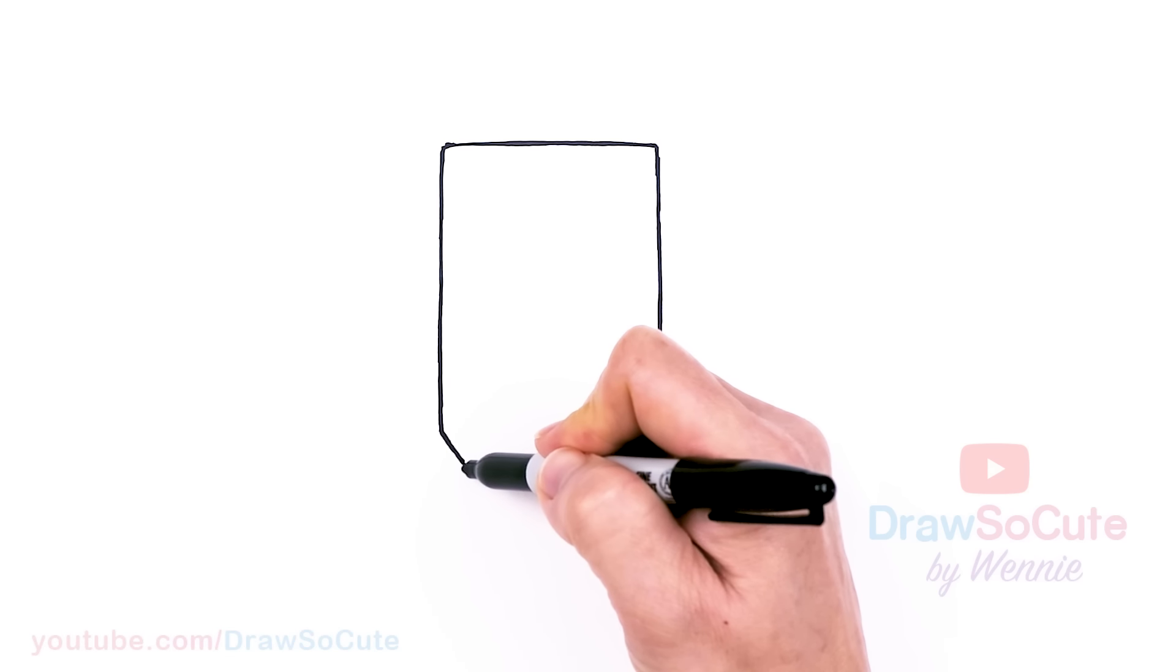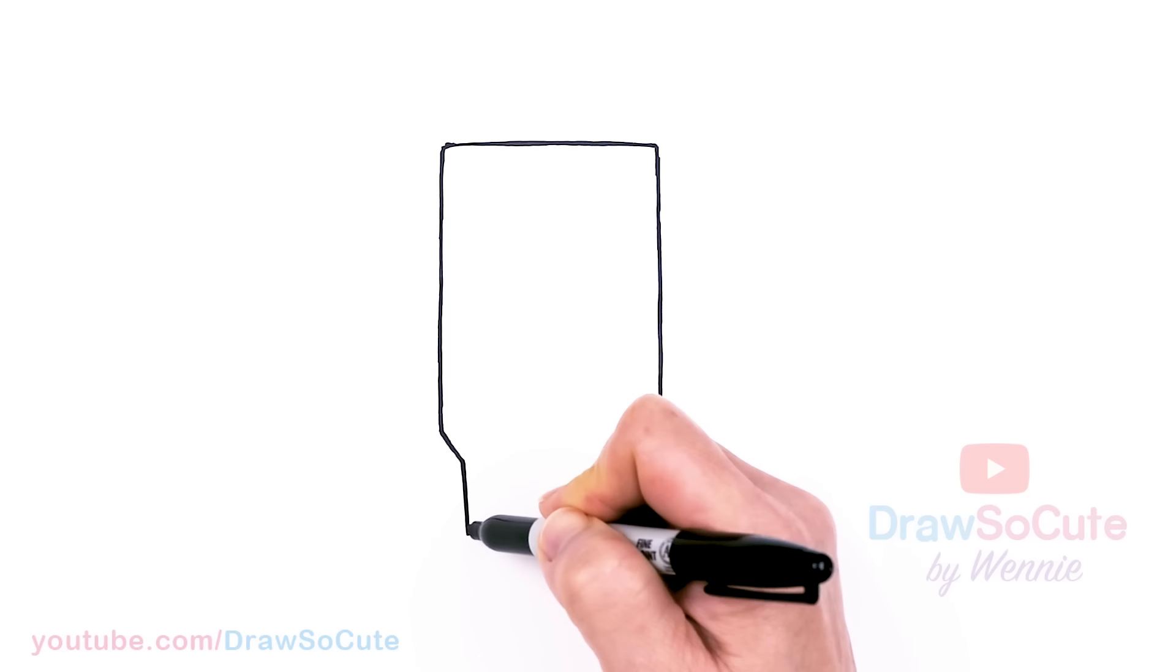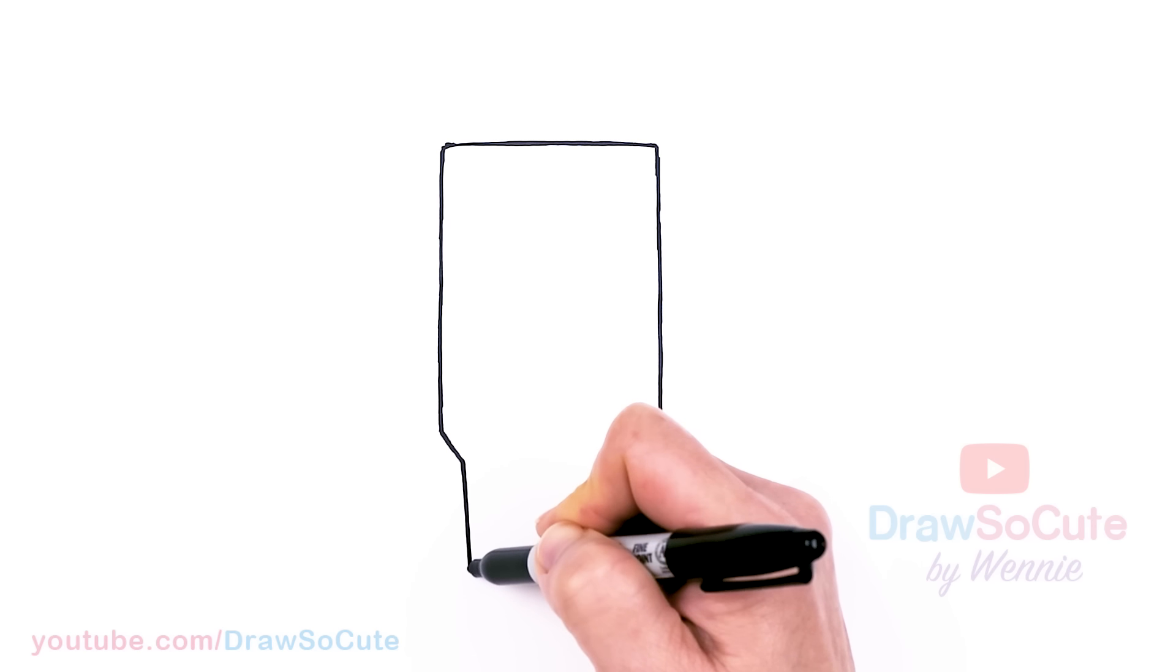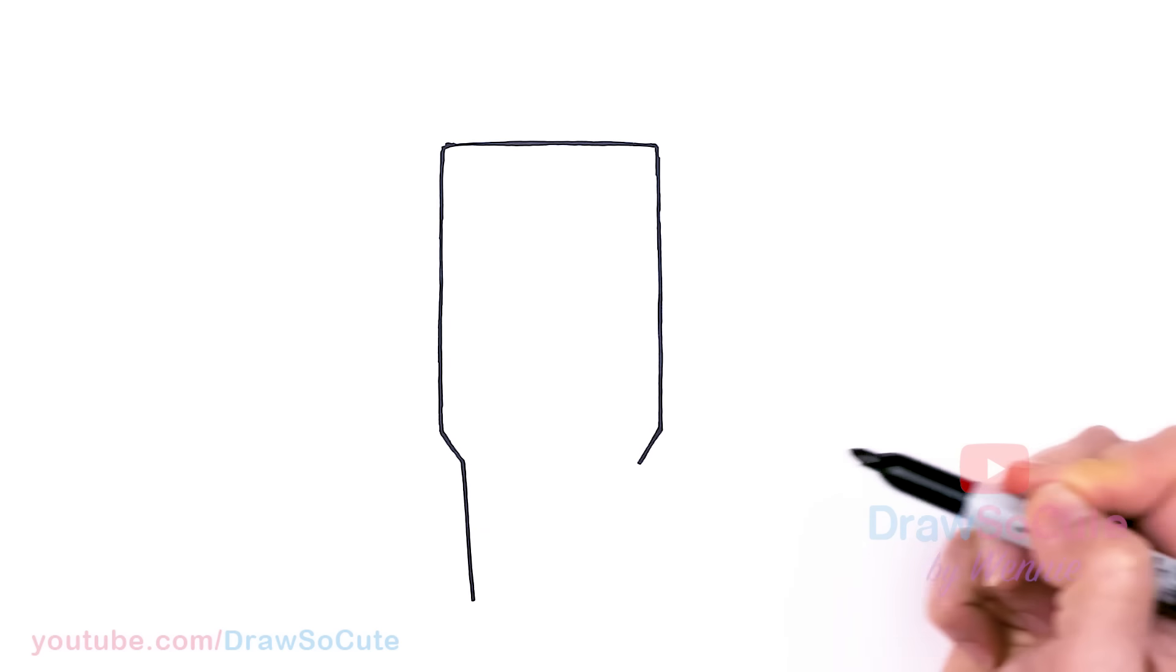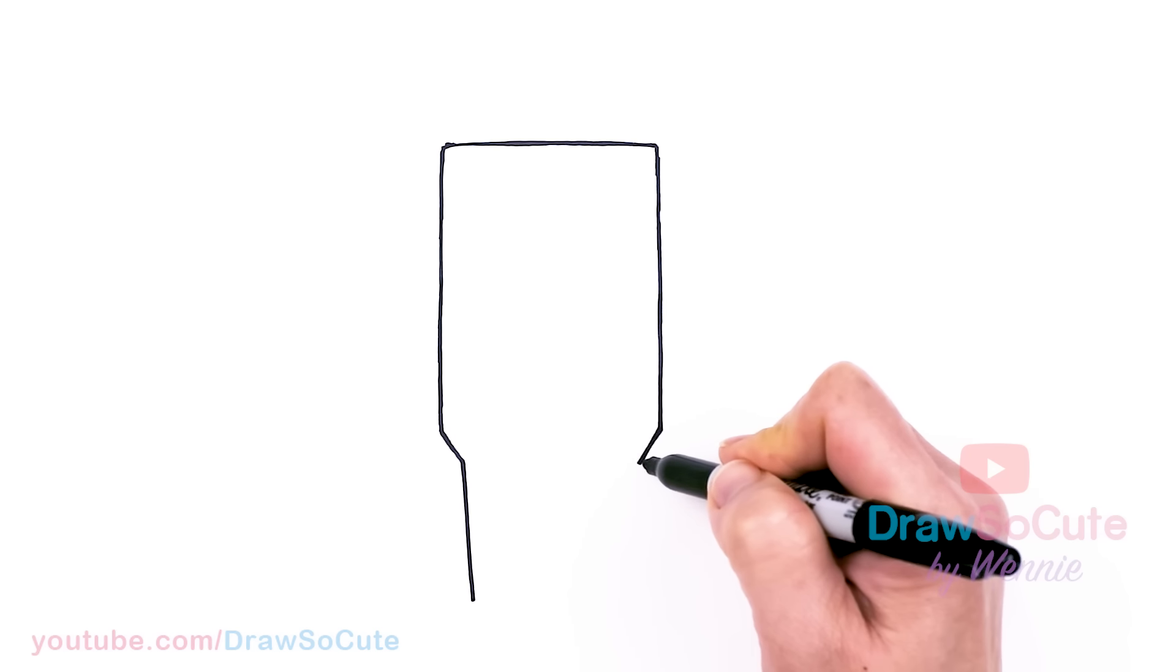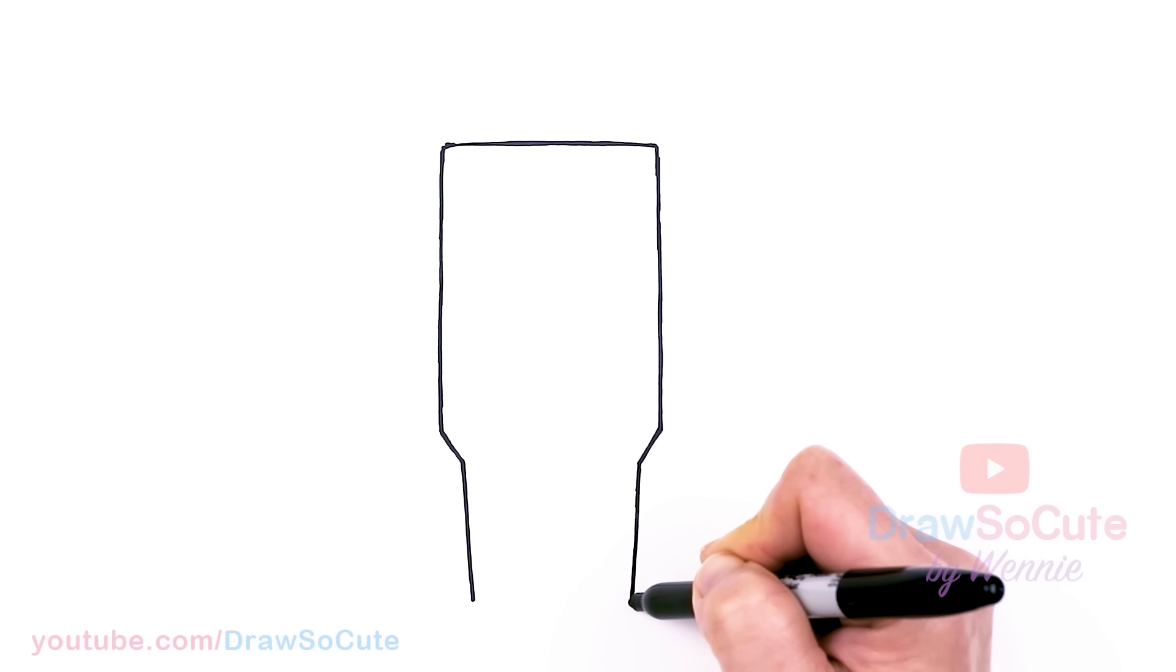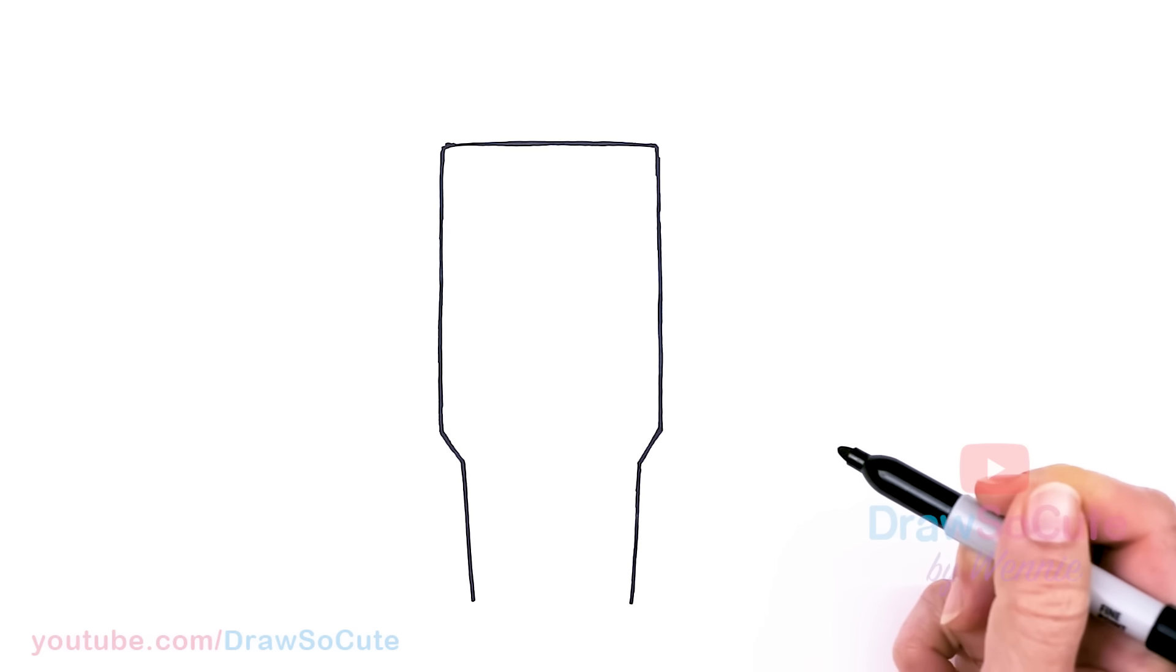And then once again, we're going to come down. And this time we're going to angle it very slightly. So almost straight, but just give it a tiny bit of an angle. So say about this much, and we're going to bring it down to about right there. So same thing here, just very slightly, but we do want an angle. And about the same area.